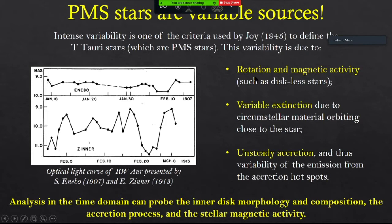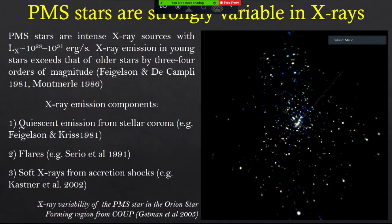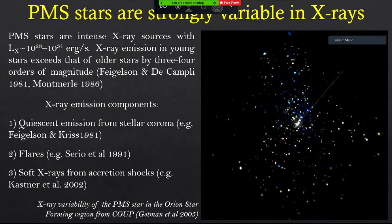This variability is due to several phenomena: mainly the magnetic activity of the star modulated by rotation, variable extinction due to circumstellar material, and unsteady accretion — mass transfer from the disk to the central star. What I hope to convince you of by the end of this talk is that the analysis of variability made simultaneously in different bands allows us to learn a lot about the properties of these stars and the morphology of the disk, mainly in the inner part and in the accretion process.